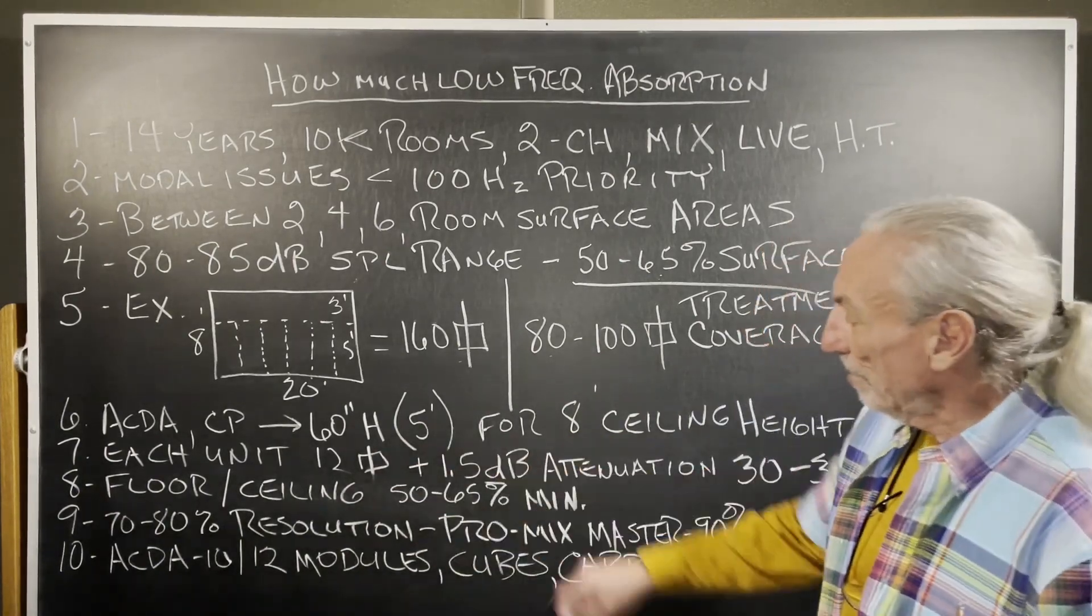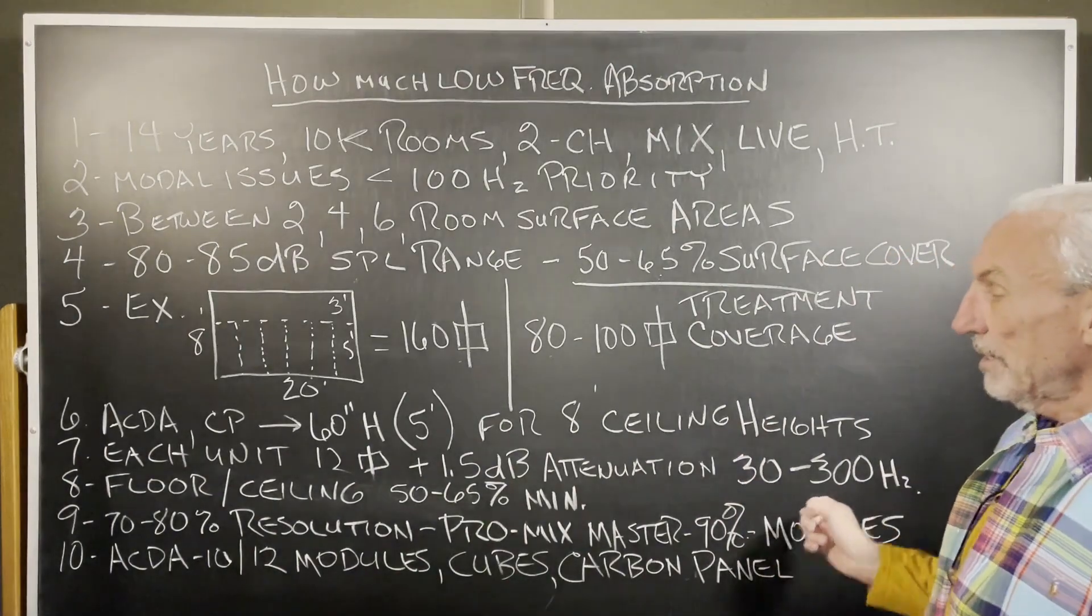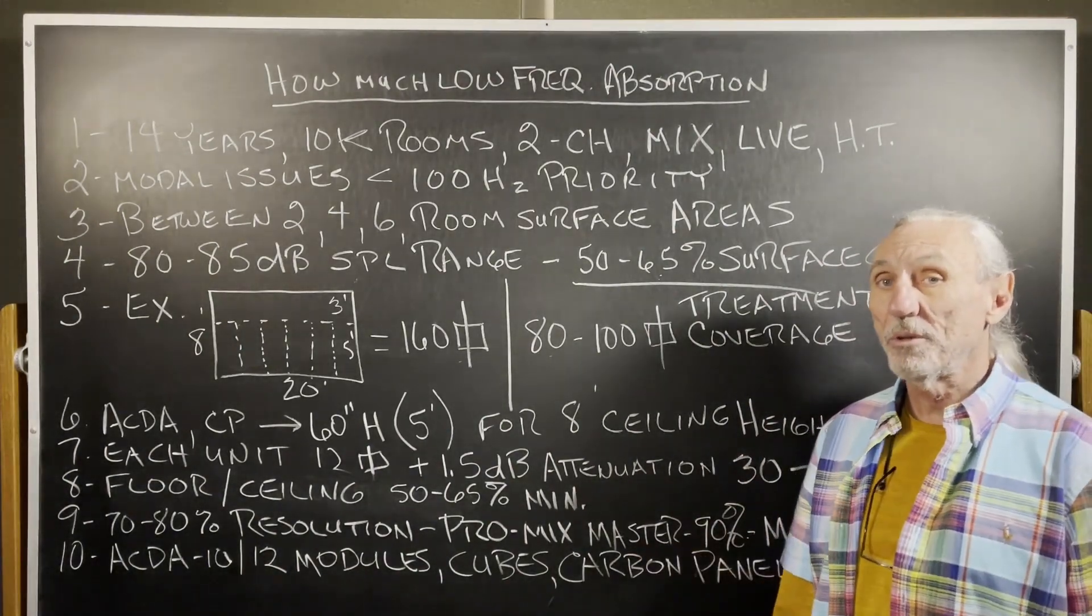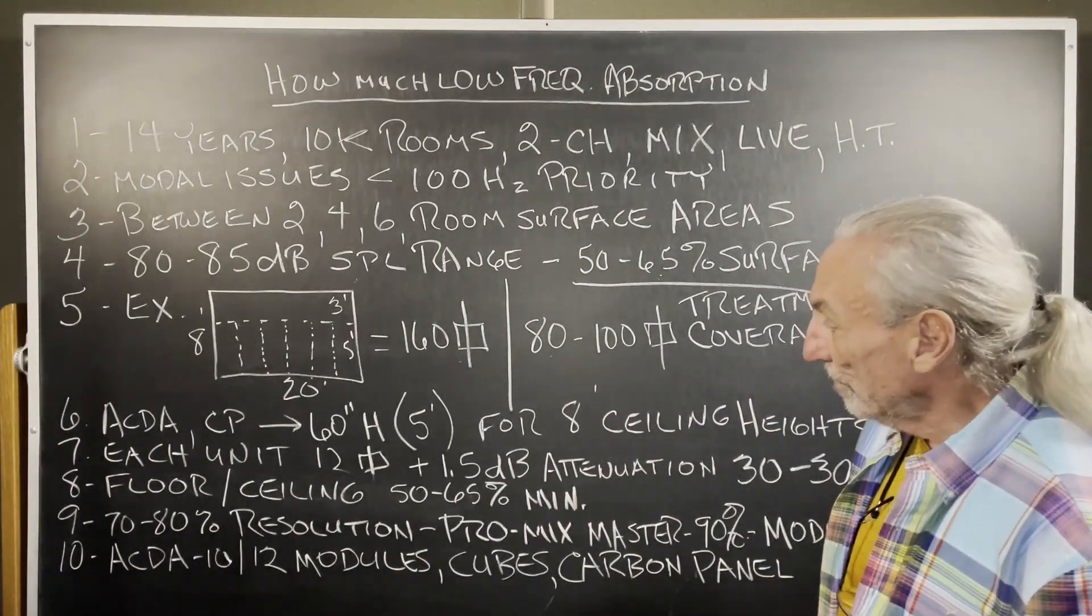Each unit's 12 square feet, about a 1.5 dB attenuation, 30 to 300. They're powerful. They're 230 pounds. They better be powerful. They're on wheels. Don't worry. Not difficult to move around.